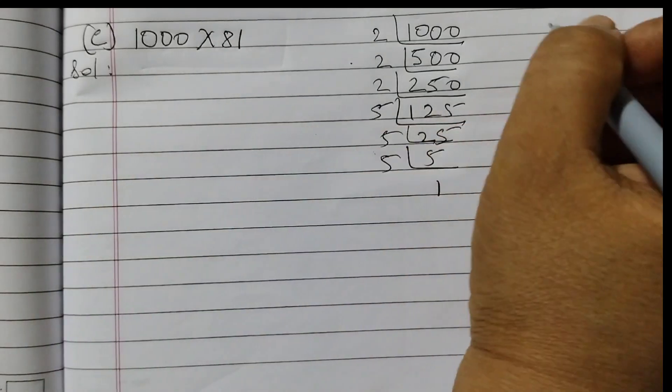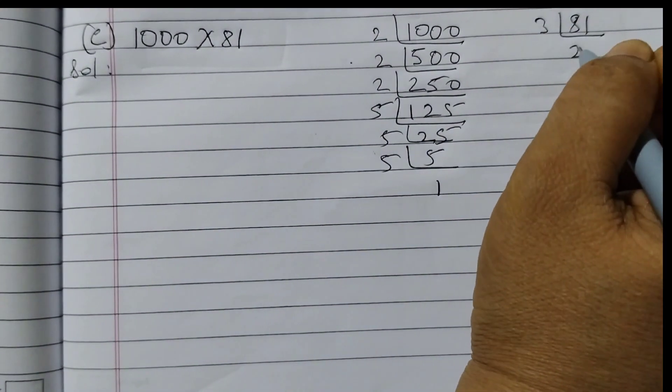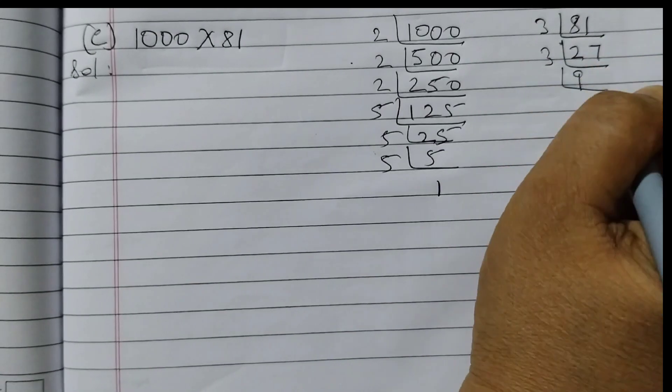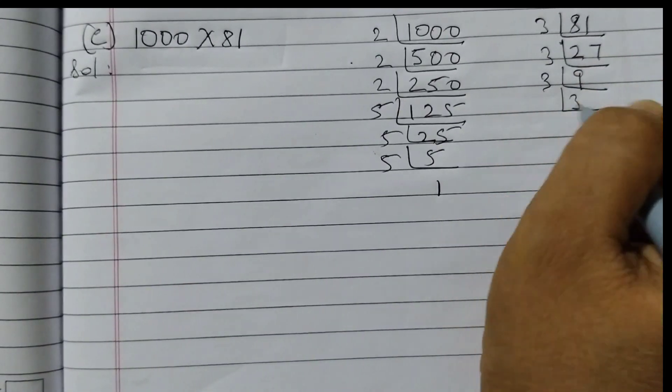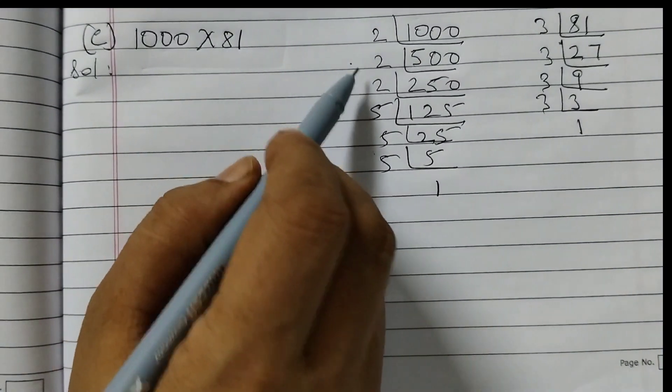Now we will do 81. Start with 3. 3×2 are 6, 7s are 21, 3×9 are 27, 3×3 are 9, 3×1 are 21, 2, 2, 3. Now we will write all the numbers in increasing order.